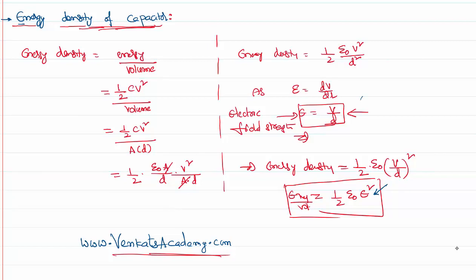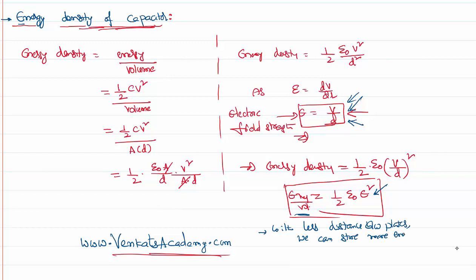The electric field intensity depends on the applied potential divided by the distance. So if you want to pack more energy per unit volume, either you apply more potential or you reduce the distance between the plates. Applying more potential doesn't make much sense because for a capacitor we want to store more energy at a lesser possible potential. Therefore, with less distance between the plates, we can store more energy per volume — that's how we design our capacitor to get the best out of it.